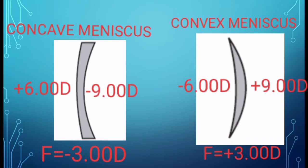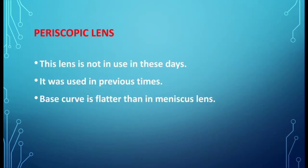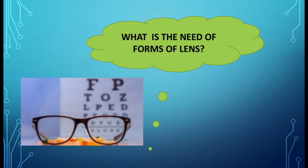Meniscus lenses are curved in nature, so they are fitted into curved-type frames. Next, periscopic lens. It was used in previous times and is not used these days. It is similar to a meniscus lens; the only difference is the base curve — the base curve is flatter in a periscopic lens.